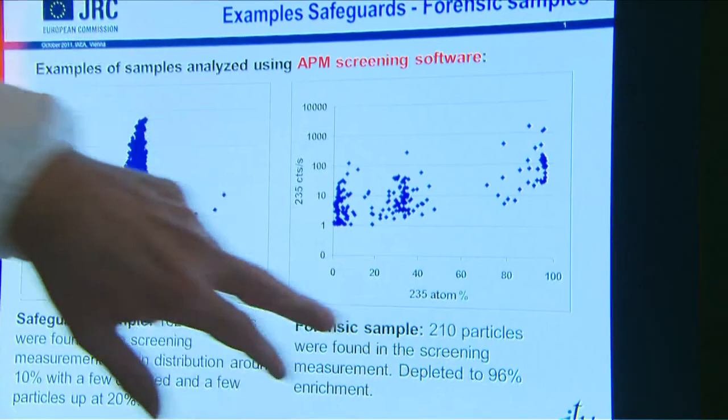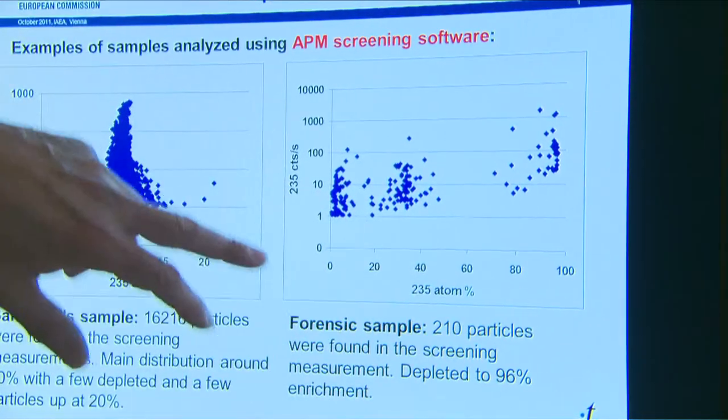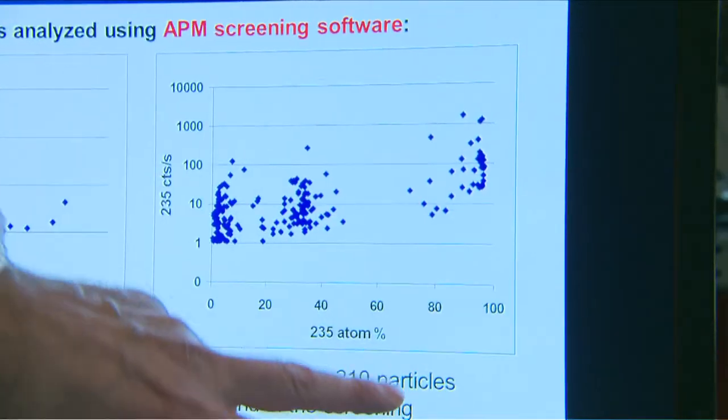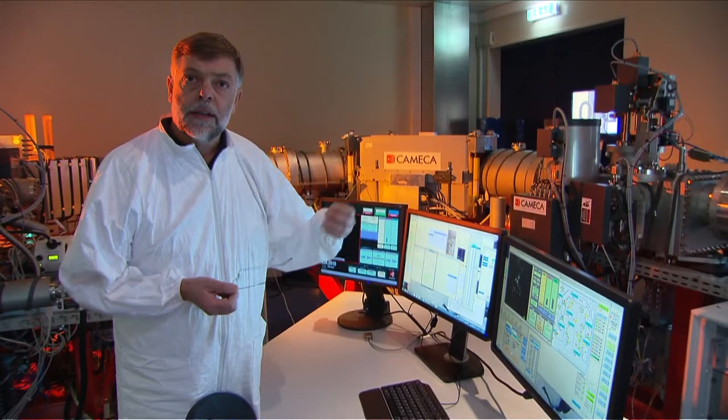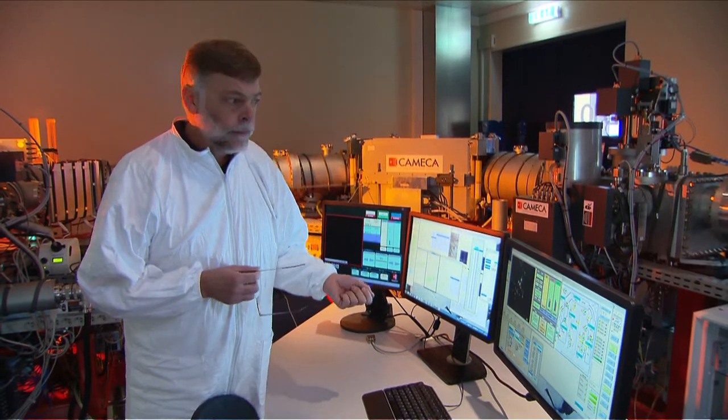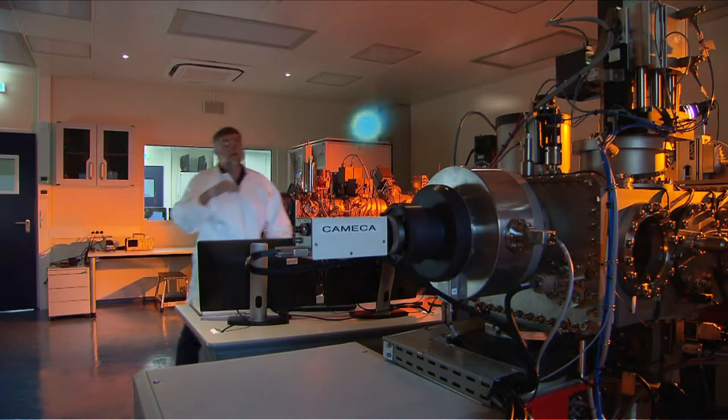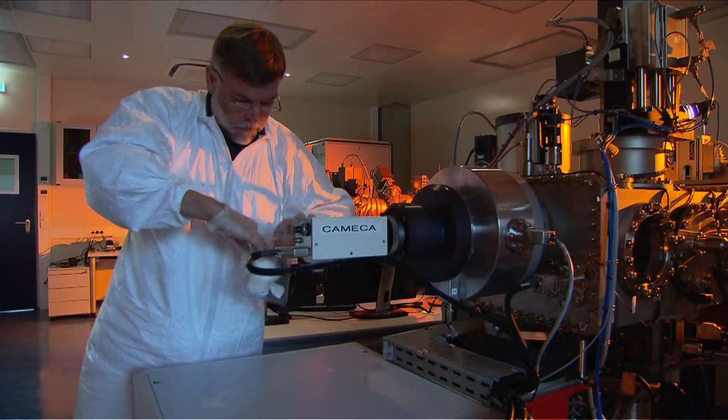For instance, typical fuel material has an enrichment of 3 to 5 percent. When the enrichment comes up to 80 percent and above, we refer to it as weapon-grade material. Unsurprisingly, the SIMS analysis becomes crucial evidence if the case goes to court.